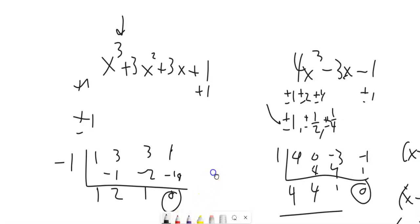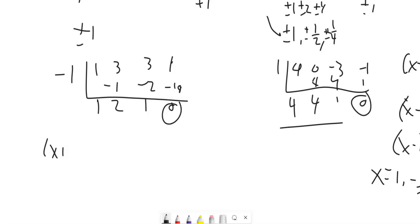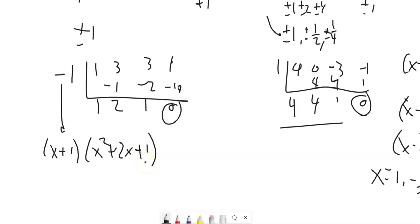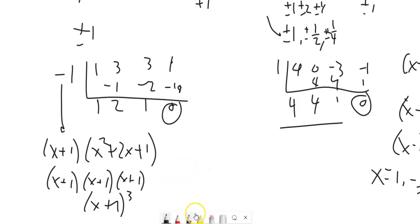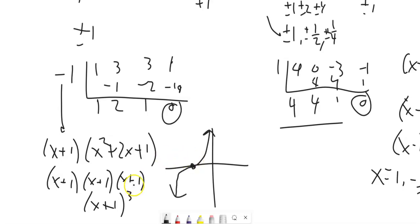So I factored out an x plus 1 because the zero is negative 1. What I got left with is x squared plus 2x plus 1. I can factor that — it's (x + 1) again. So the full factorization is (x + 1) cubed! That means negative 1 is a repeated root with multiplicity 3, and the graph shows a little cubic shape at negative 1.